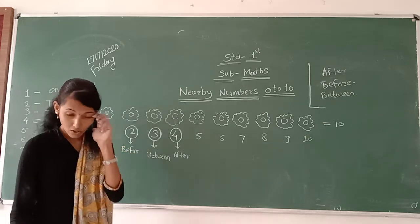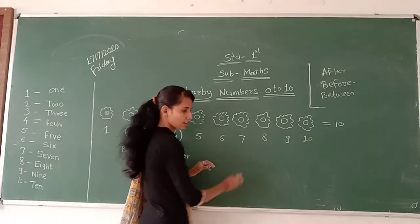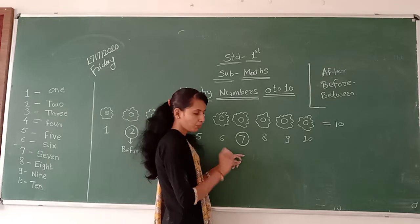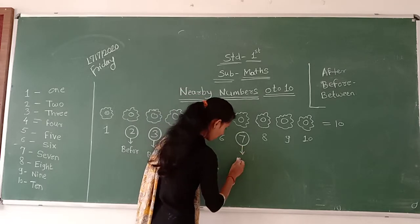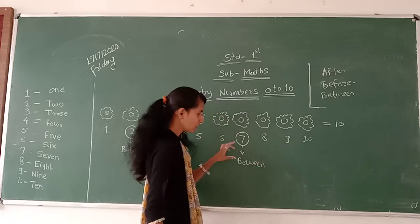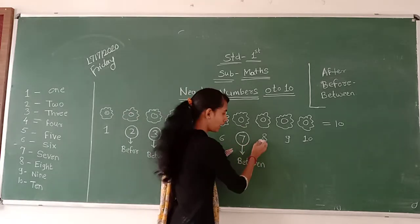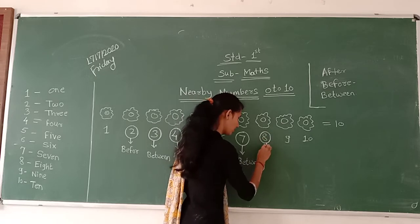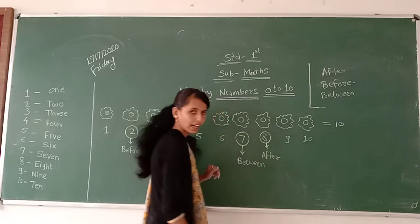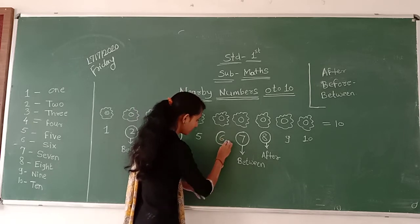Next, 7 is the middle between number. After number is 8 — 7 after is 8, so 8 is the after number. And 7 before number is 6 — 6 is the before number.